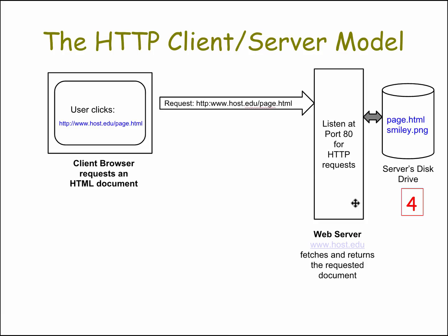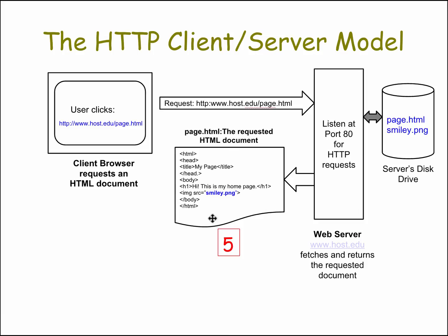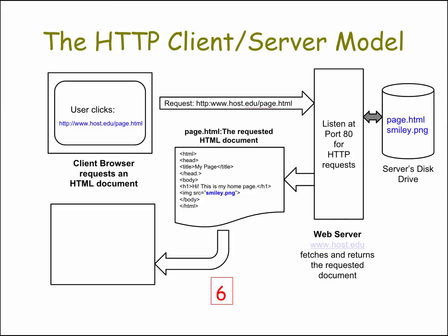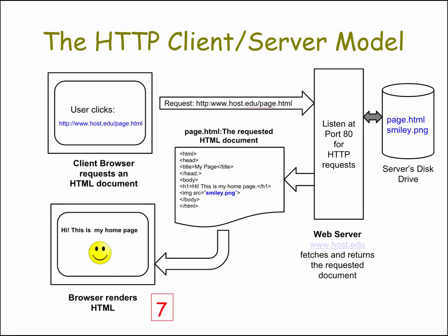The server then sends it back, encoded as an HTML document, to the browser that requested it. The browser then renders the page, and it appears the way you'd expect it to. Those are the seven parts of the transaction seen from a high level. We'll look in more detail in a future presentation at what's going on behind the scenes.